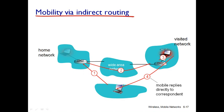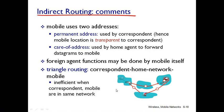The main drawback is called the triangle problem. The correspondent cannot call directly to the user — they have to call the home network, from home network to the foreign network, and then to the mobile node. This is called a triangle problem, and to overcome this we look at direct routing.